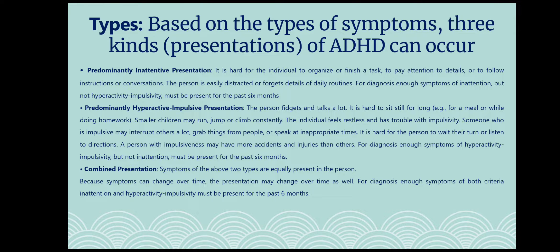Predominantly hyperactive-impulsive presentation: The person fidgets and talks a lot. It is hard to sit still for long, for example during a meal or while doing homework. Smaller children may run, jump, or climb constantly. The individual feels restless and has trouble with impulsivity. Someone who is impulsive may interrupt others a lot, grab things from people, or speak at inappropriate times. It is hard for the person to wait their turn or listen to directions. A person with impulsiveness may have more accidents and injuries than others. For diagnosis, enough symptoms of hyperactivity-impulsivity but not inattention must be present for the past six months.